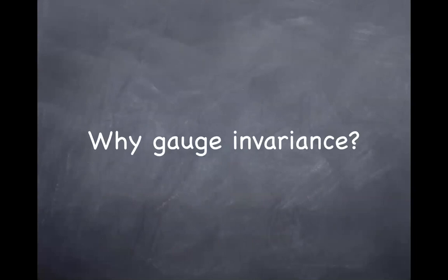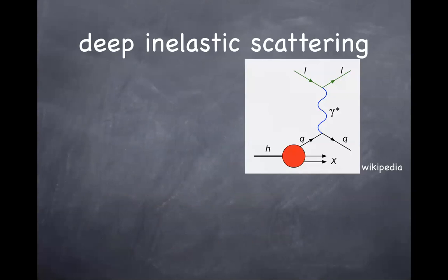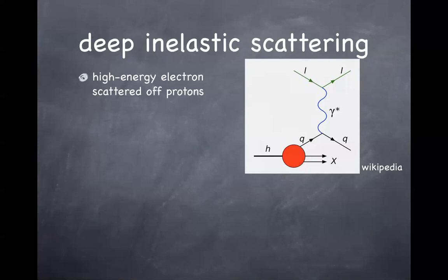Let me move into the lecture. As I advertised already some time ago, we are studying part three of Peskin-Schroeder, which is mostly about non-Abelian gauge theory and the Higgs mechanism. The first question I'd like to ask is a little bit of motivational stuff about gauge theory in general. Why do we care about gauge invariance to begin with? Peskin-Schroeder gives this motivation based on phenomenological reasons.